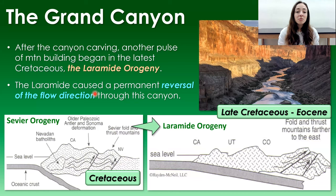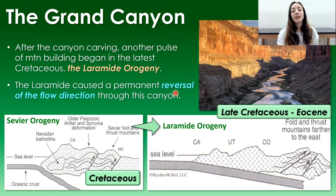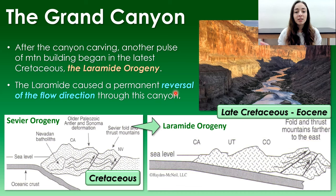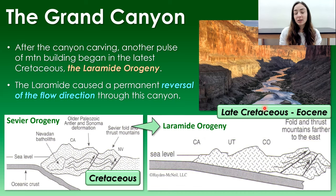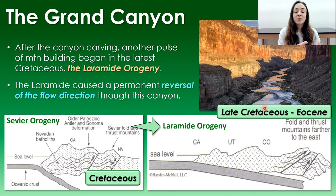The Laramide Orogeny caused a permanent reversal of flow direction through the canyon during its initial phase at the latest Cretaceous. The river that previously flowed in the opposite direction carved out much of the canyon, then the Laramide began and reversed the flow direction — and since that reversal, the direction has remained the same.